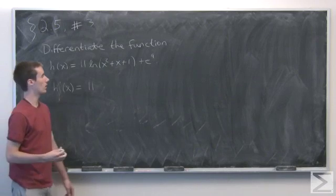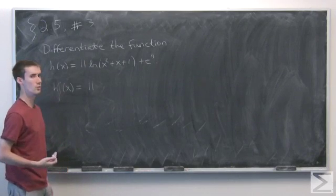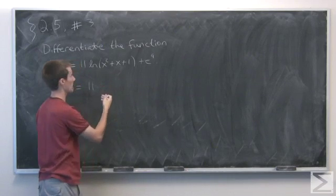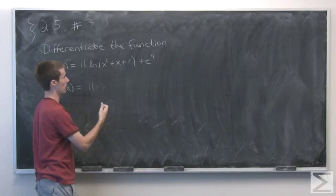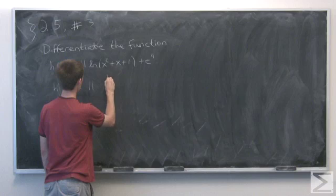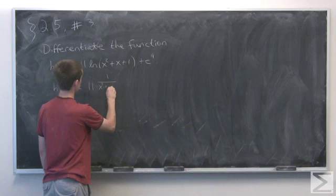Now the derivative of the natural log is 1 over x. Here we're going to have to apply the chain rule. So first take the derivative of the natural log evaluated at x² plus x plus 1. So we have 1 over x² plus x plus 1.